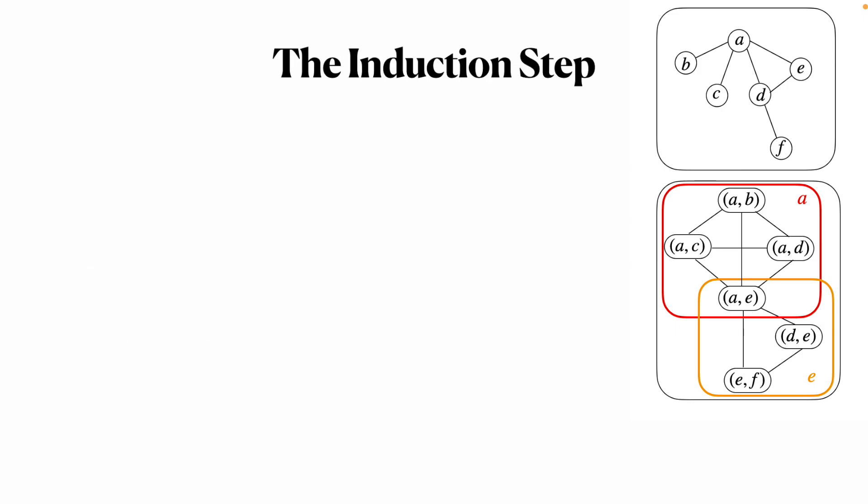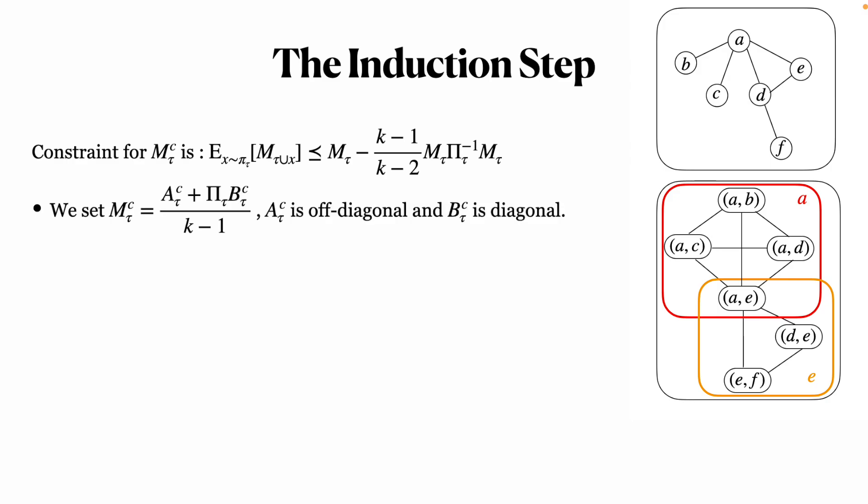For the induction step, we perform subtle decompositions. First, we break down M into an off-diagonal matrix A and a diagonal matrix B. We further decompose A into matrices corresponding to cliques in the line graph. For each vertex in the original graph, there is a corresponding clique in the line graph whose edges are disjoint.